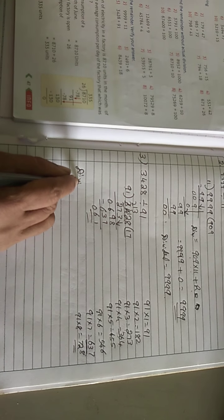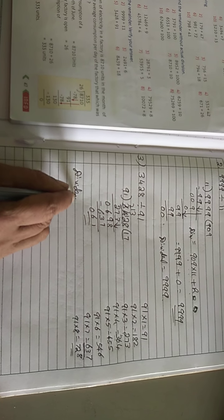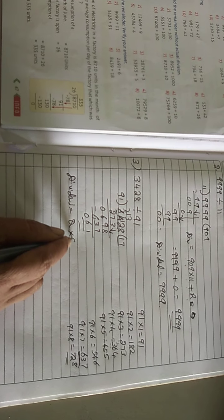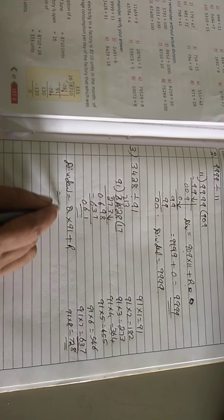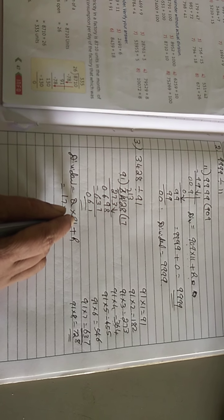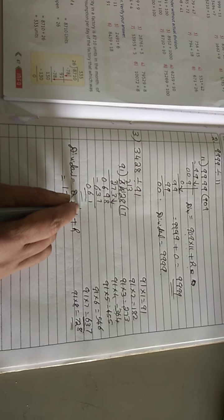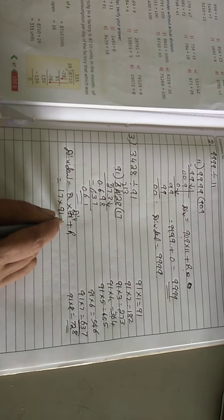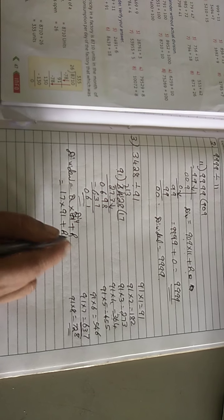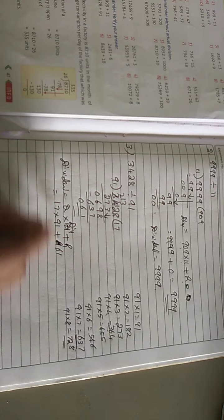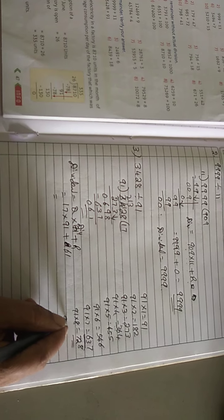You know that dividend is equal to quotient into divisor plus remainder. So quotient is how much? 17. This is divisor children: 91. Plus remainder — remainder is how much? 61. So 17 into 91, multiply there.